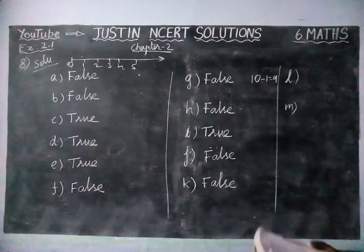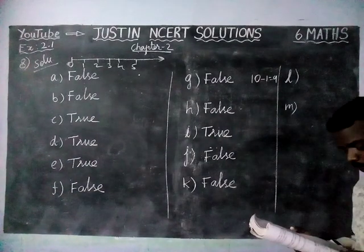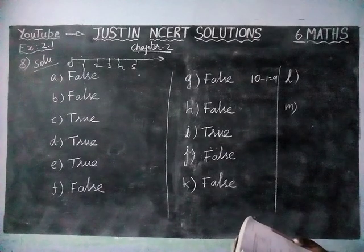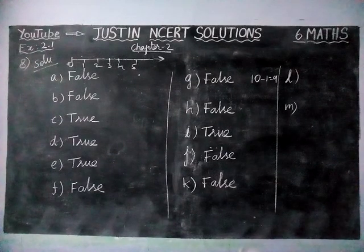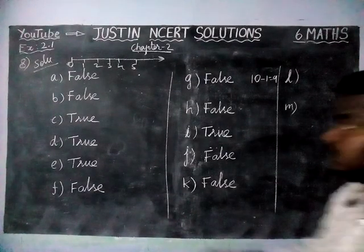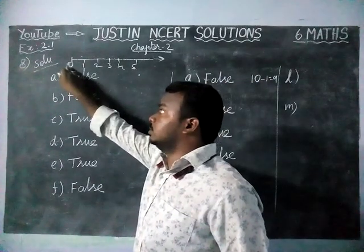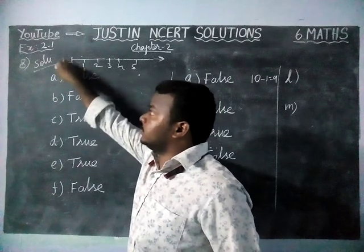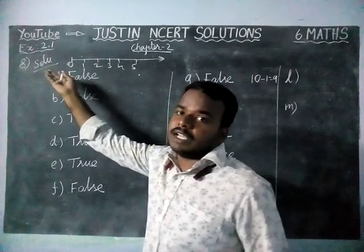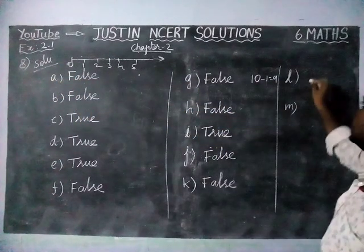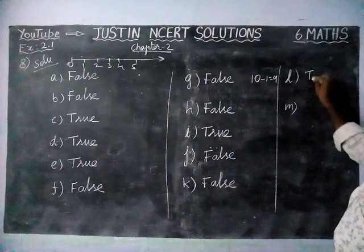Next, option L: 'The whole number 0 has no predecessor.' Yes, that is true, because 0 is the smallest whole number. The predecessor for 0 does not exist as a whole number. Therefore, this statement is true.